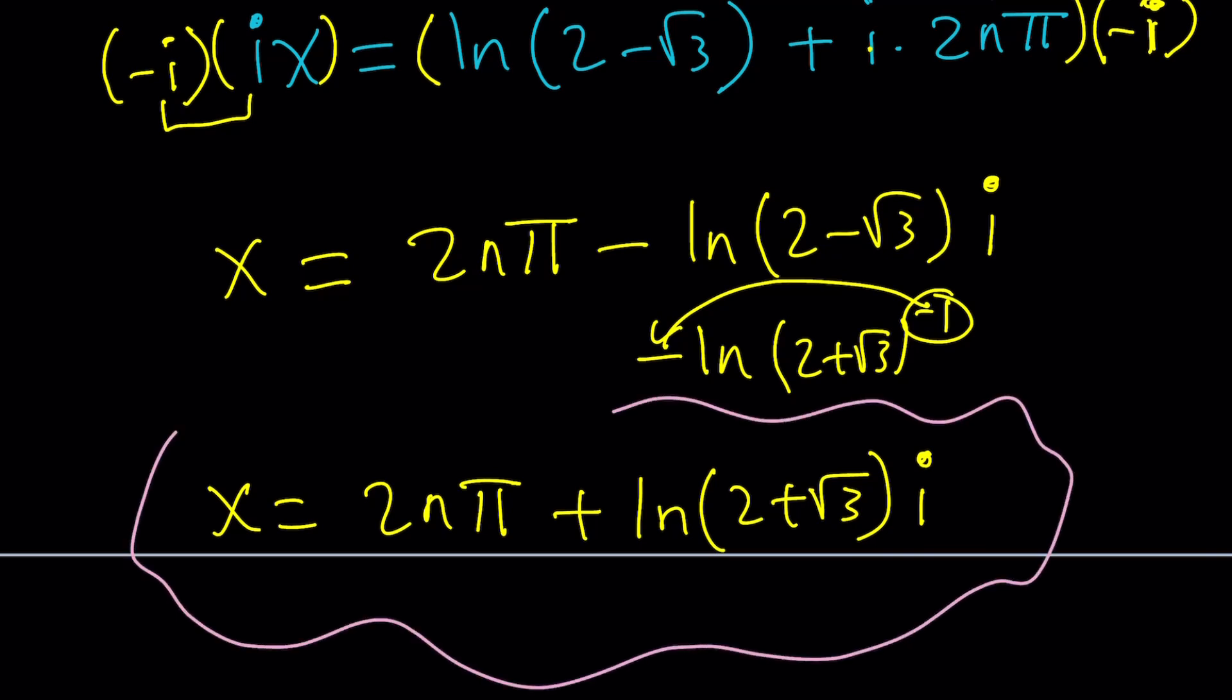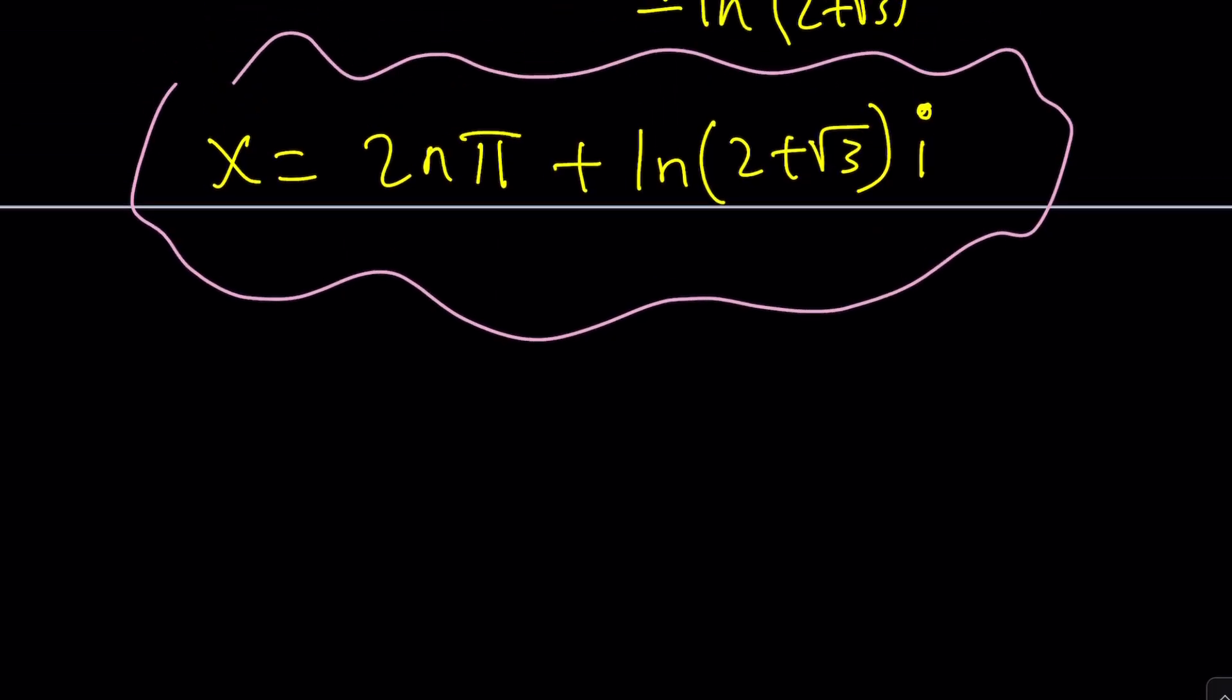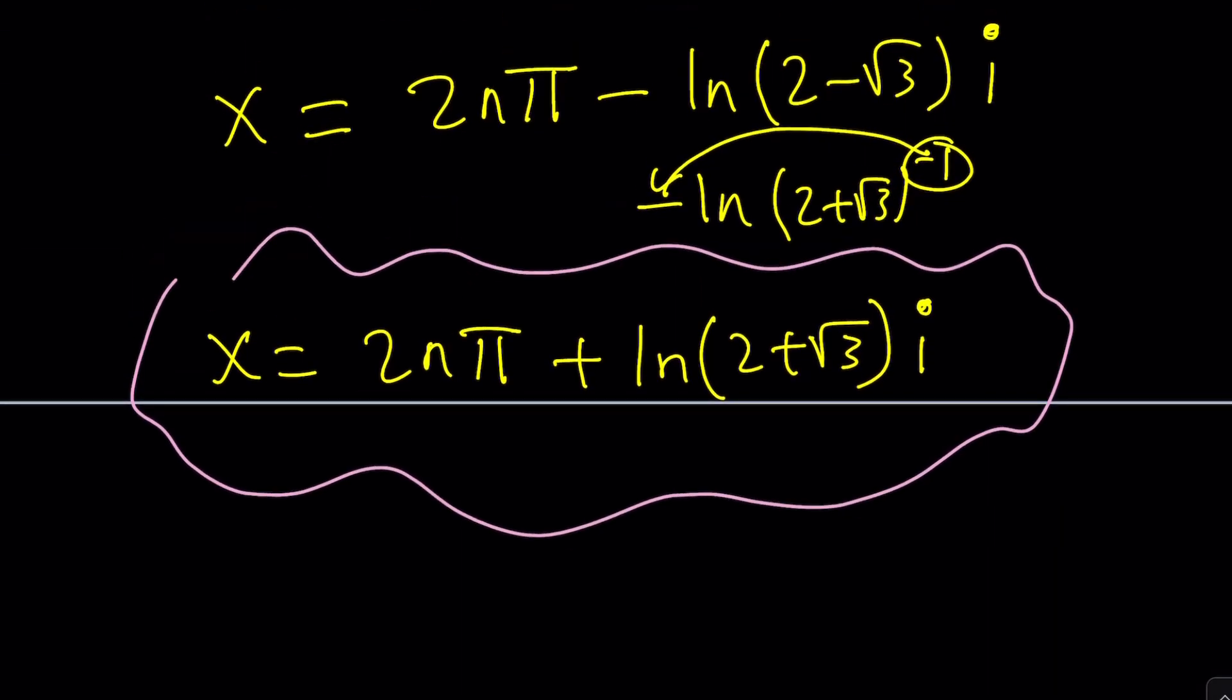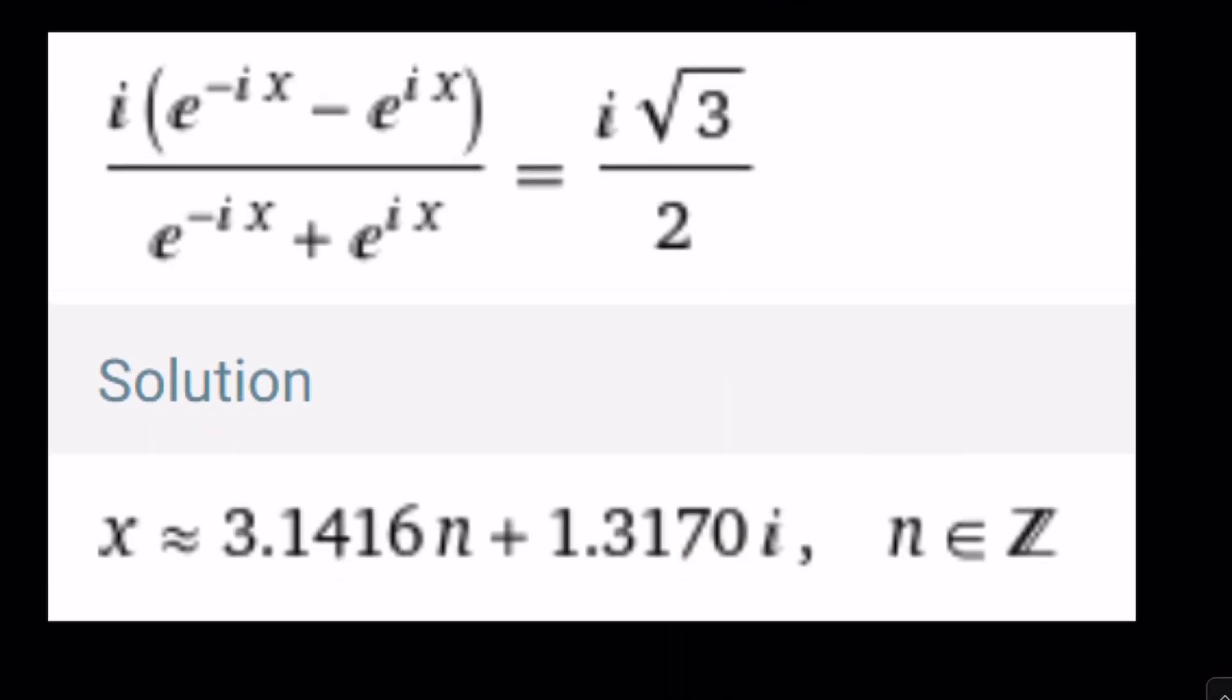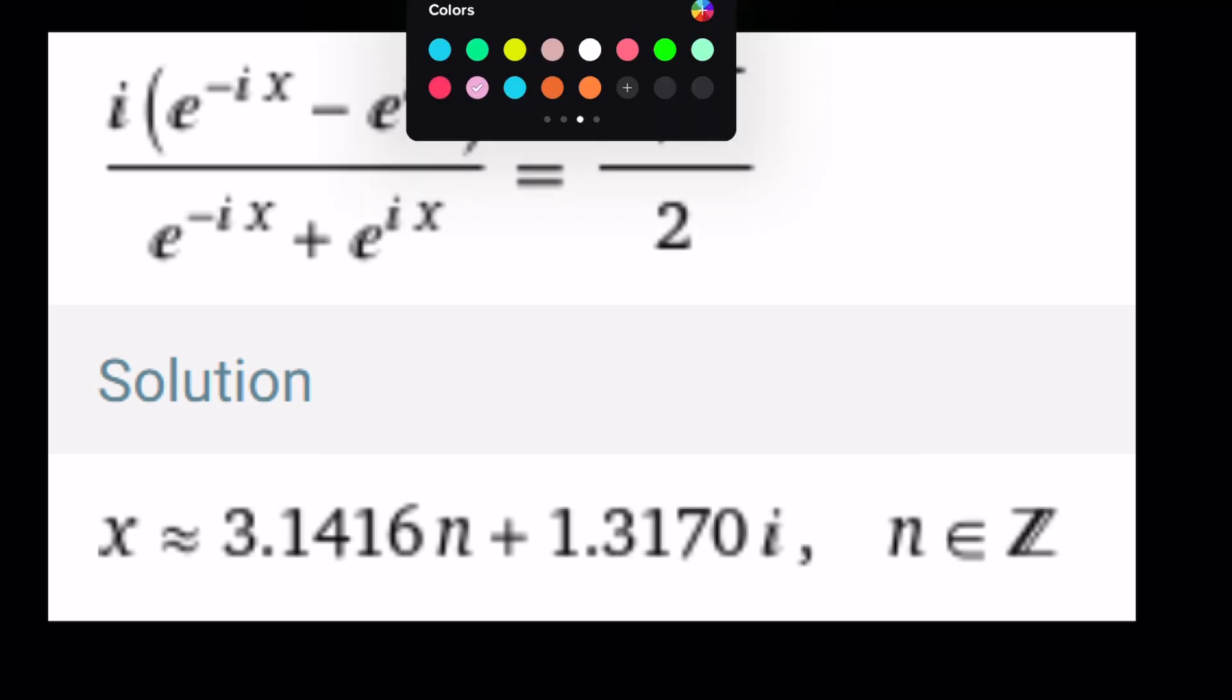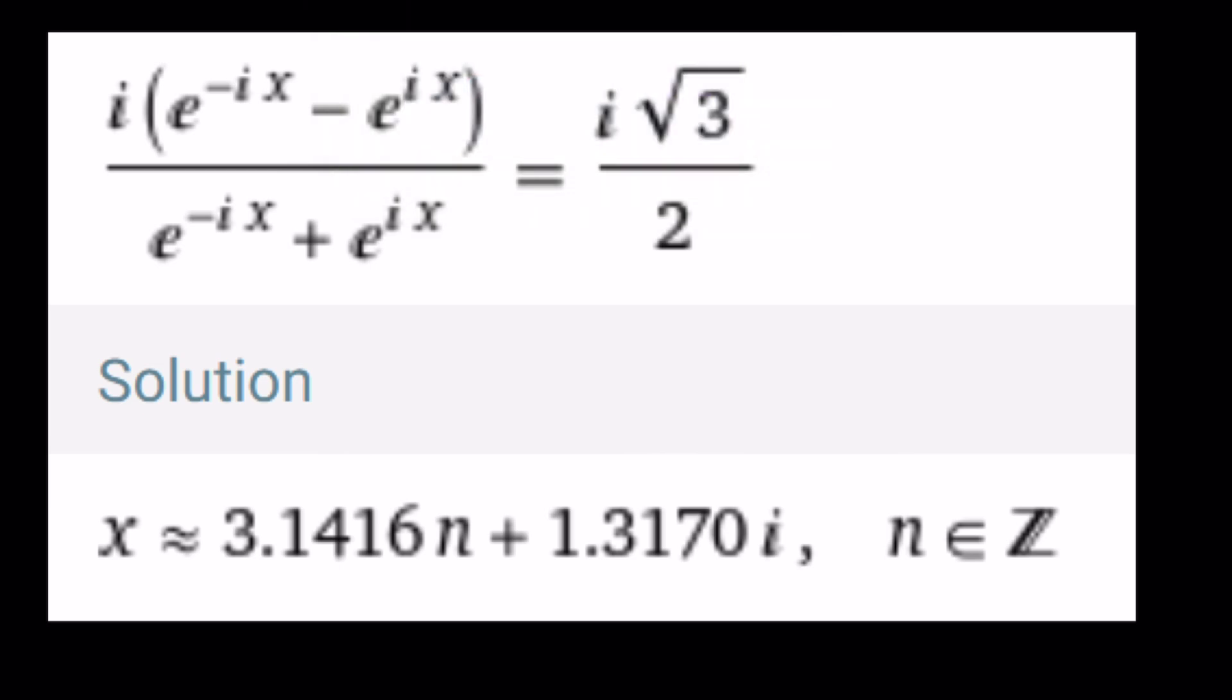That's going to be my solution, and I'm also going to show you the result from Wolfram Alpha. Notice that we have a 2n pi being added as the real part and the other part is imaginary. But Wolfram Alpha gives me n pi instead of 2n pi. Something to think about. I'm going to leave it to you as an exercise.